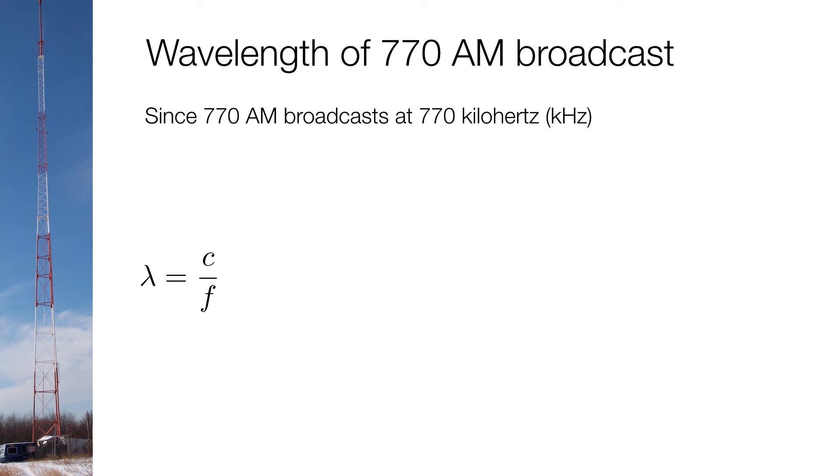Well, since 770 AM is broadcasting at 770 kHz, that's really the same thing as saying 770,000 Hz. And we can express that in scientific notation as 7.7 times 10 to the 5th Hz. We can also rewrite the unit of Hz and express that as 7.7 times 10 to the 5th per second. And the reason why we do this is because we can now take this value and plug this into our equation below.